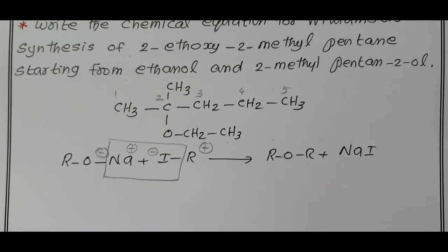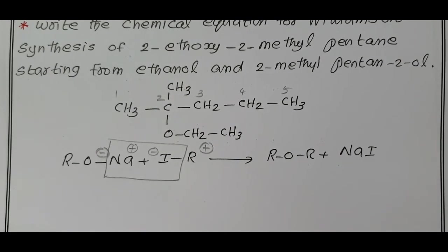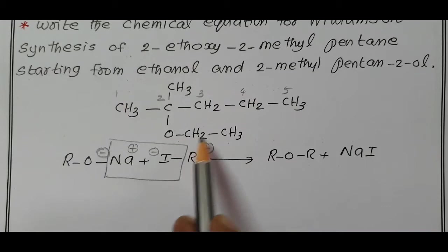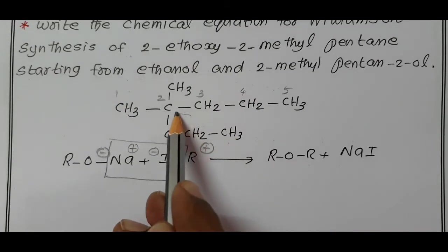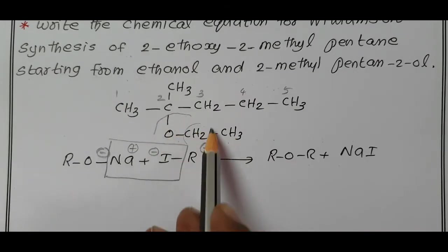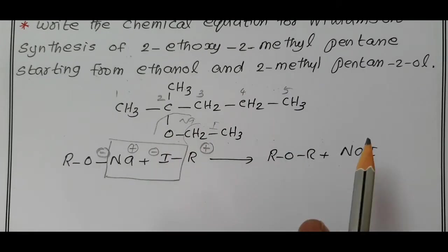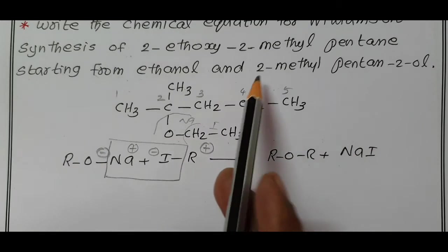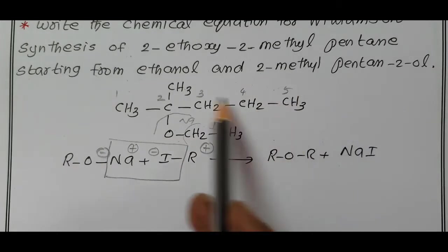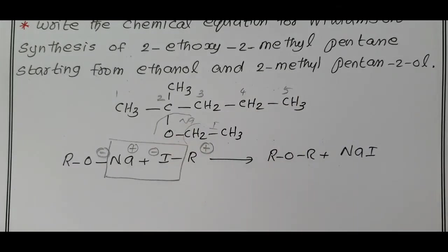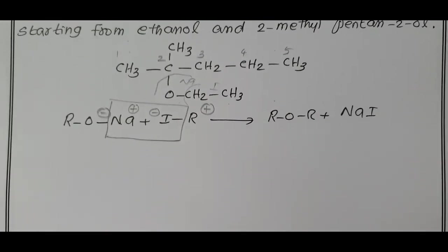Now, we are going to select the reactant. This is ethyl alcohol, so ethyl iodide we have to take first. Sodium, this compound, the 2-methyl-pentanol-2-ol, 1-H is replaced by 1-sodium. How I take, how I prepare the 2-reactant first?